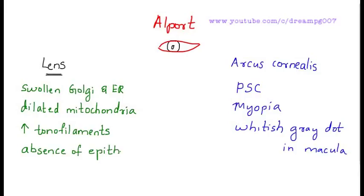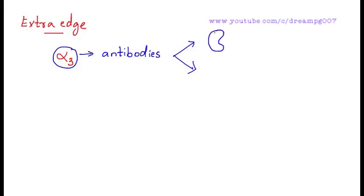Let's have some more points. Sometimes antibodies are formed against the α3 subunit, and these antibodies get deposited in kidney and the lung. That will lead to a syndrome called Good Pasteur syndrome.